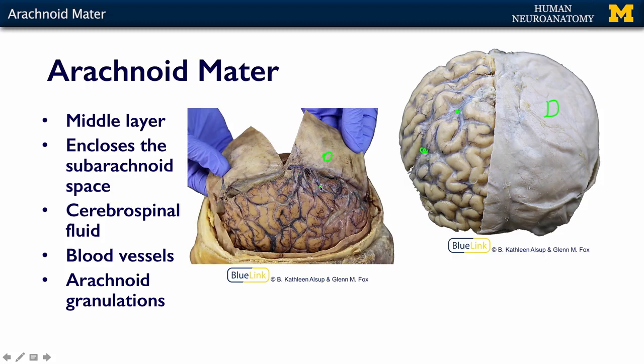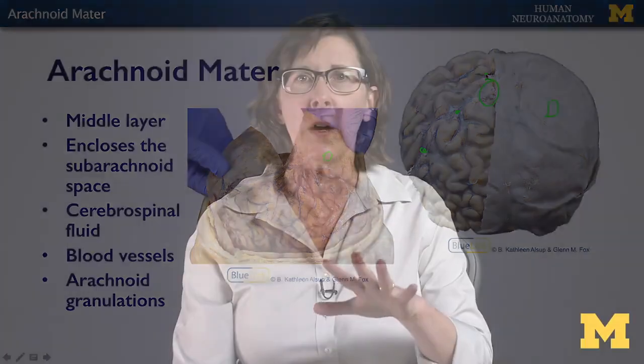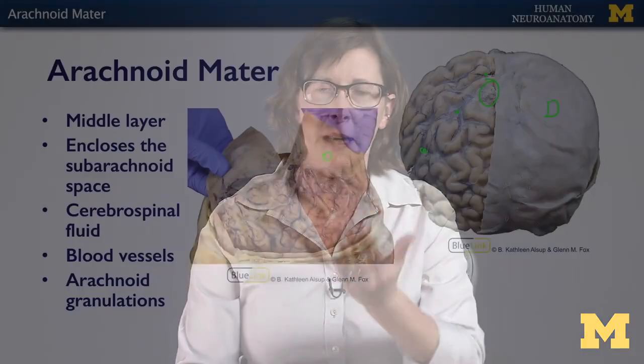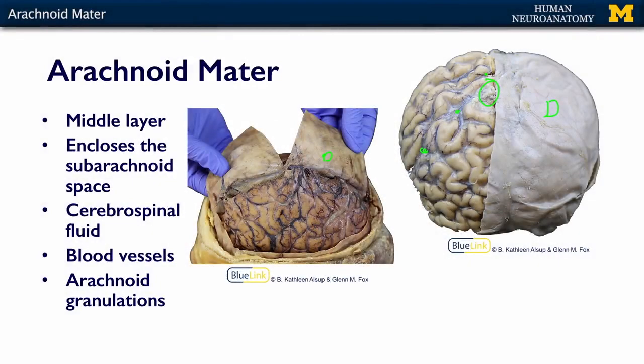The arachnoid granulations can also be seen in this region. These are specialized areas where the arachnoid actually pushes into the dural sinuses that we talked about when we talked about the dura. This is how cerebrospinal fluid exits the subarachnoid space and gets back into venous circulation.